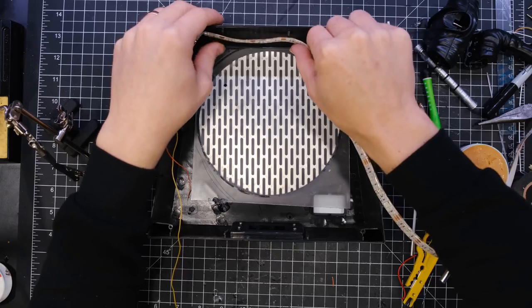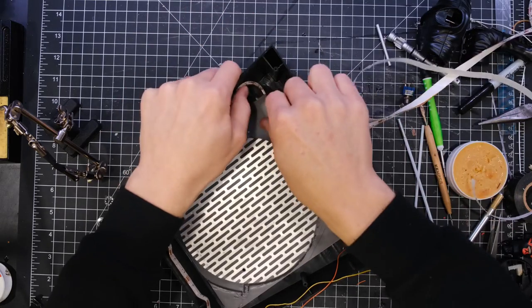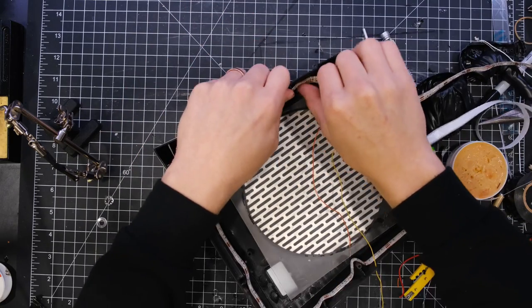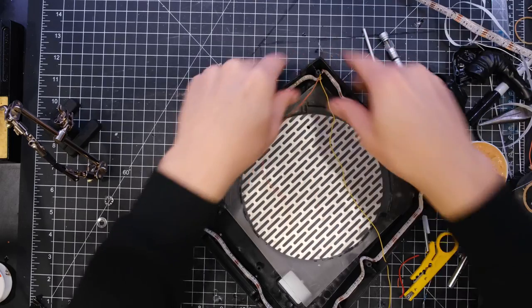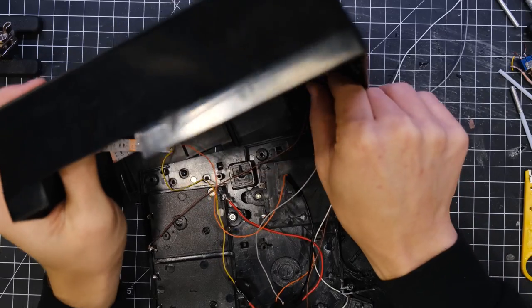I peeled off the backing and I stuck that around the inside of the box. Then connected everything to the batteries and to the switch.